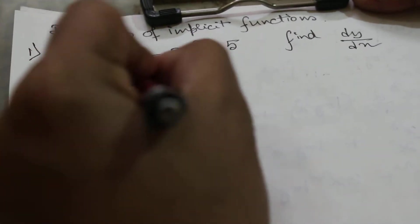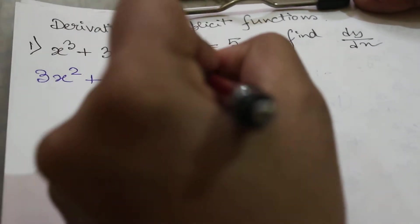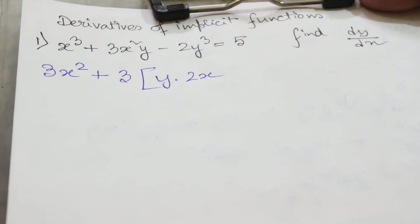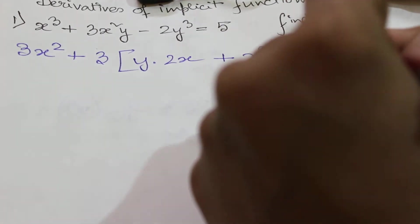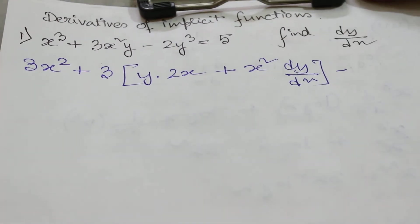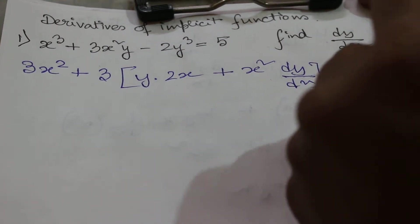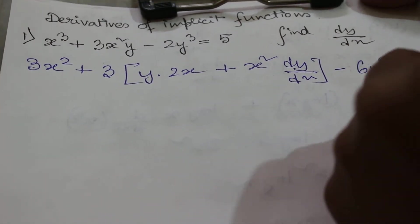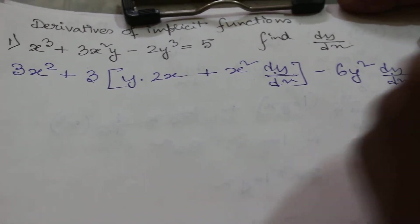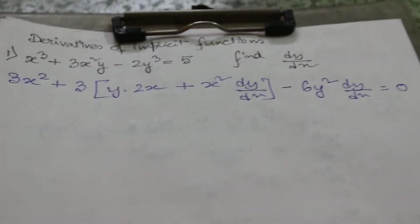That is y into differentiation of x² plus x² into differentiation of y. That is dy/dx minus differentiation of 2y³ which will be equal to 6y² dy/dx equal to 0. As 5 is constant, differentiation of it will be 0.